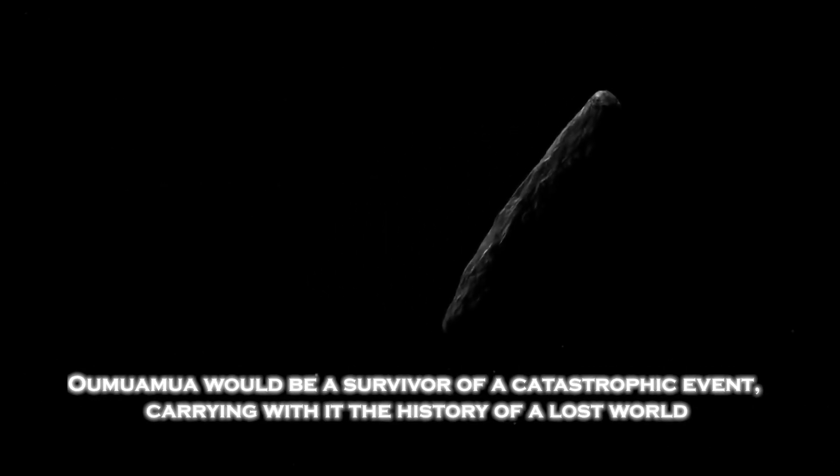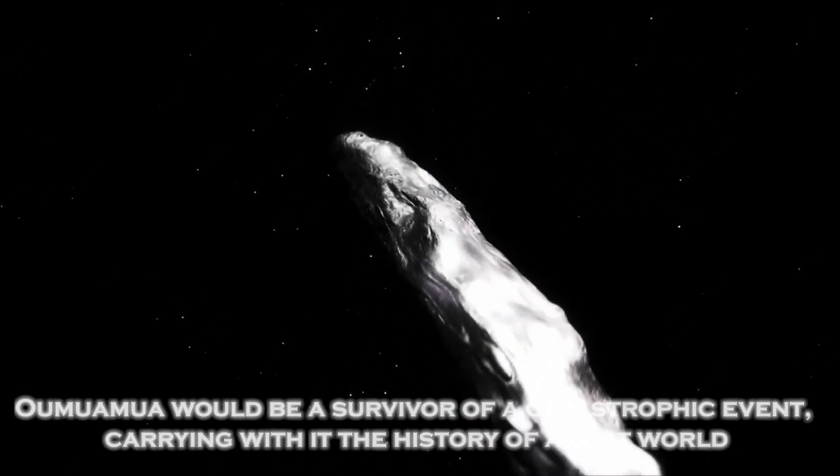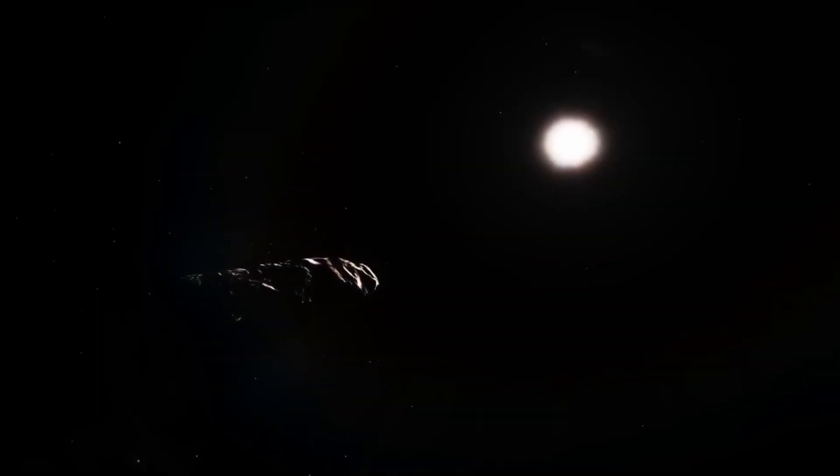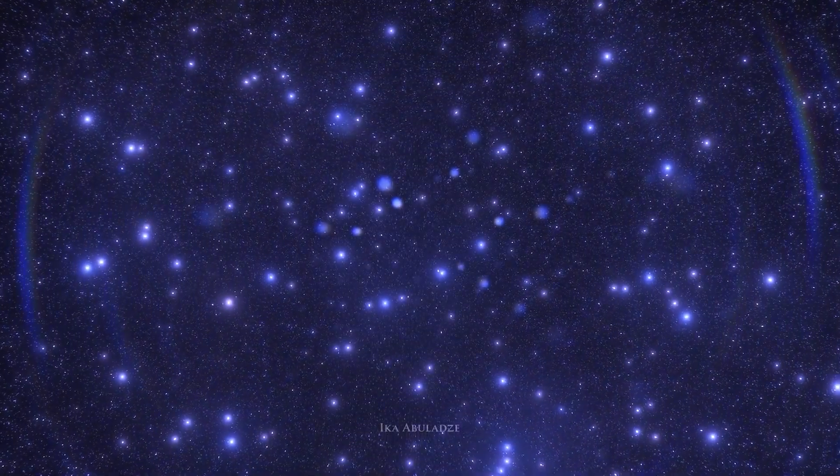If this theory is correct, Oumuamua would be a survivor of a catastrophic event, carrying with it the history of a lost world. This opens a new window to study how star systems evolved and change over time, and how catastrophic events can give rise to objects that end up traveling through the galaxy.